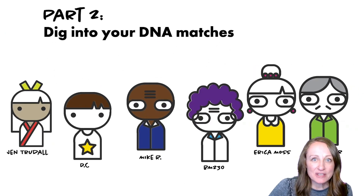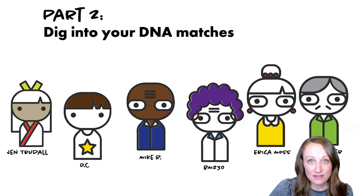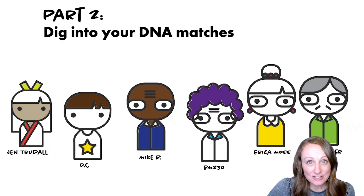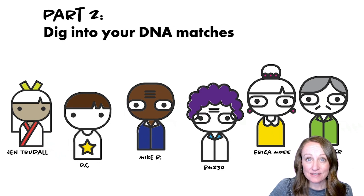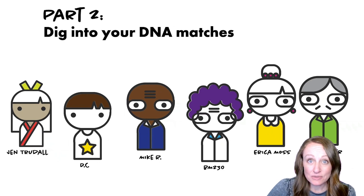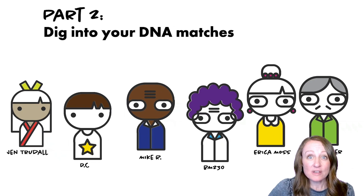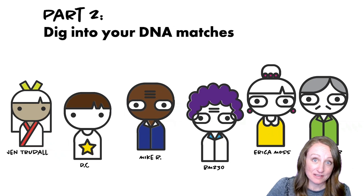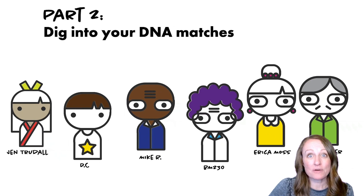Assuming you've taken a DNA test already, or you're thinking about taking one, when you do you'll get a list of DNA matches. These are other people who've taken a DNA test and share some level of DNA with you. Theoretically these people are related to you, and you might want to figure out exactly how. You may even want to use what they know about their family history to help you learn more about yours.